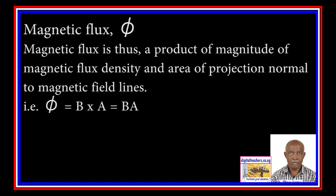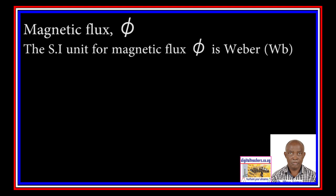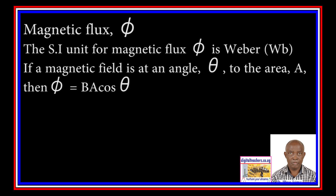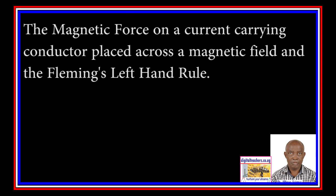That is, Phi is equal to BA. The standard unit for Magnetic Flux Phi is the Weber (Wb). If a magnetic field B is at an angle theta to the area, then Magnetic Flux Phi is equal to BA cos theta.